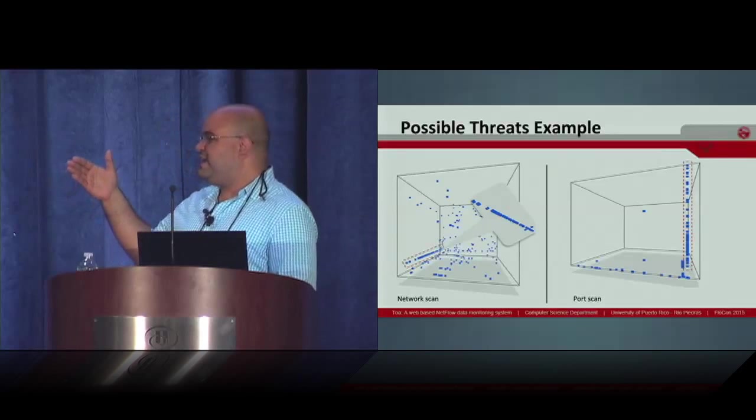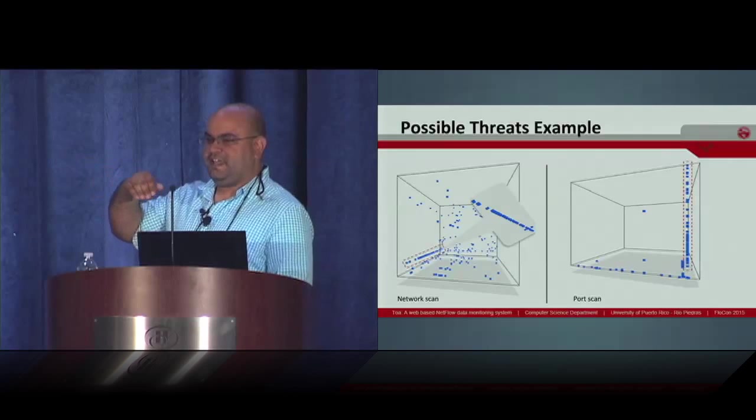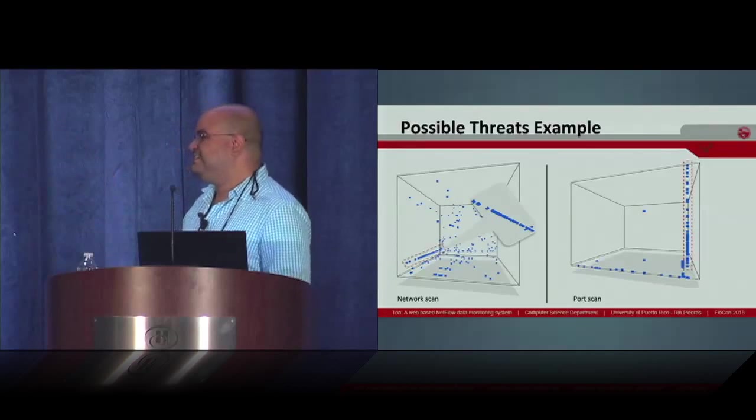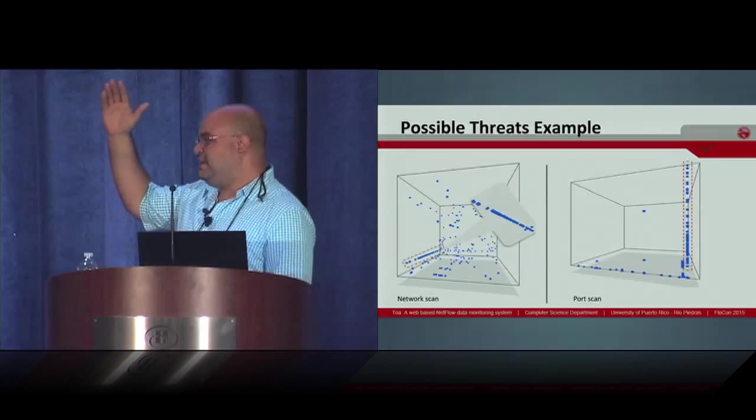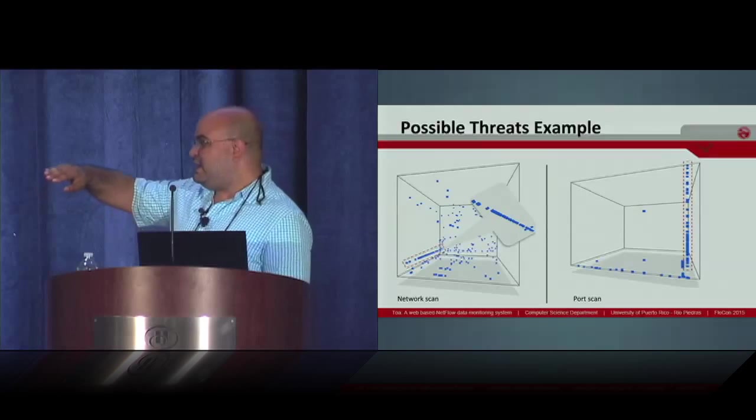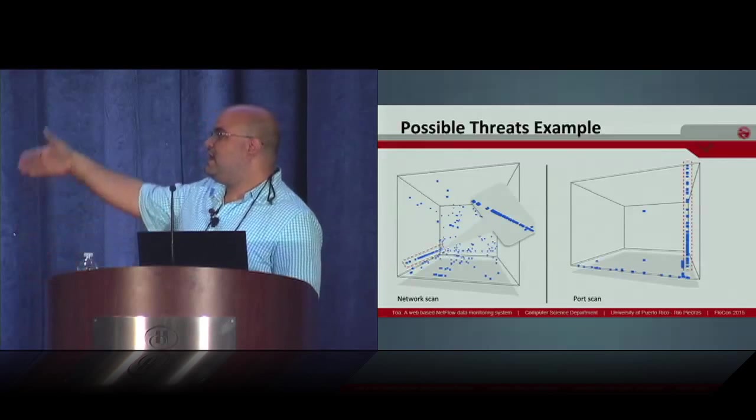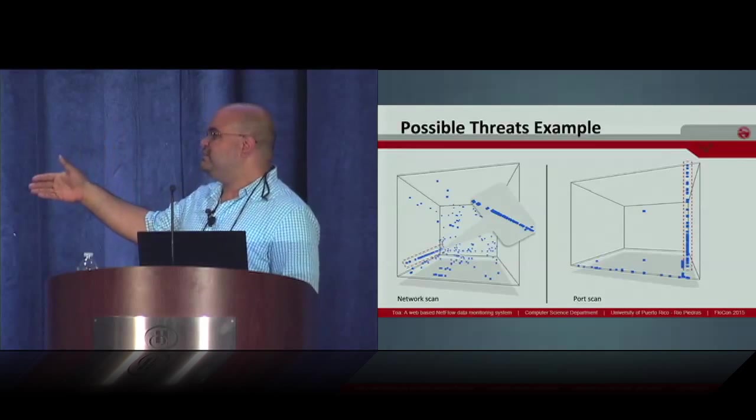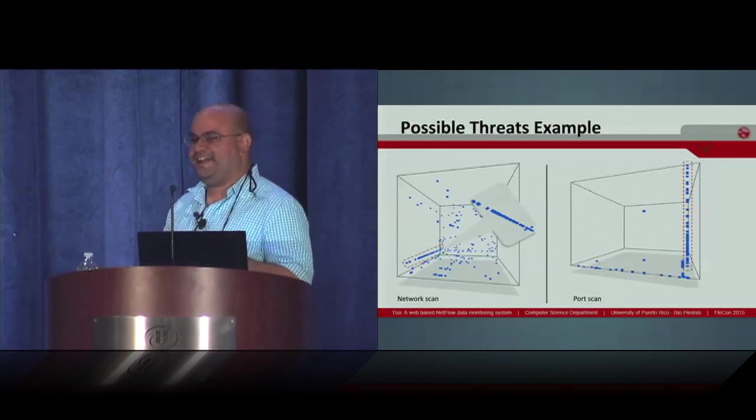Actually, the cube is just in the x-axis, it is the source address of the IPv4. Three bit of numbers in the x-axis. The y-axis will be the destination address, and the z-axis will be the destination port. So when you find a line in the x-axis, it can be a network scan. And if you find a line over the y-axis, it will probably be a port scan and stuff like that. It will just appear like that, a really beautiful animation.